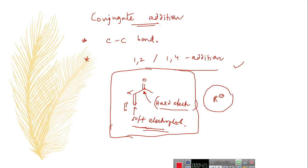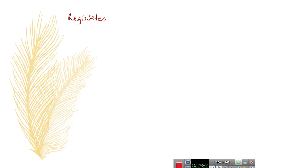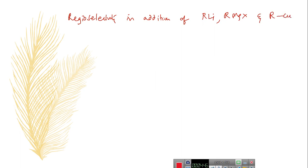We have different kinds of organometallic reagents. Let us consider the regioselectivity in addition of different kinds of organometallic reagents — organolithium, organomagnesium, and organocopper reagents — to alpha, beta unsaturated carbonyl compounds.